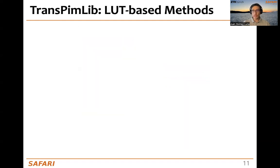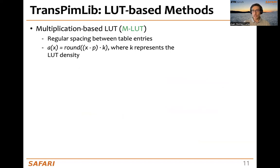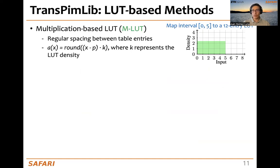For LUT-based methods, we implemented several variants. The first is the multiplication-based LUT, or MLUT, which provides regular spacing between table entries. The address function involves multiplying by k, which represents the LUT density. For example, mapping an interval [0, 5] to a 12-entry lookup table yields a constant density of 2.4 across all intervals — a regular spacing between table entries.